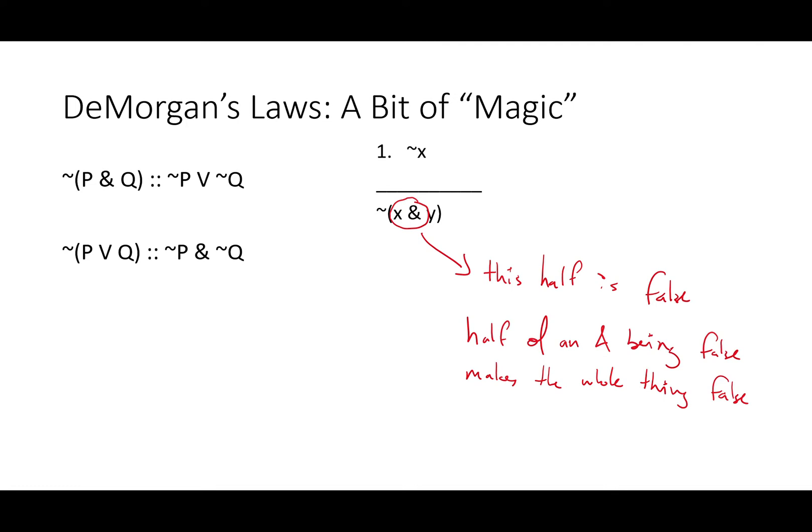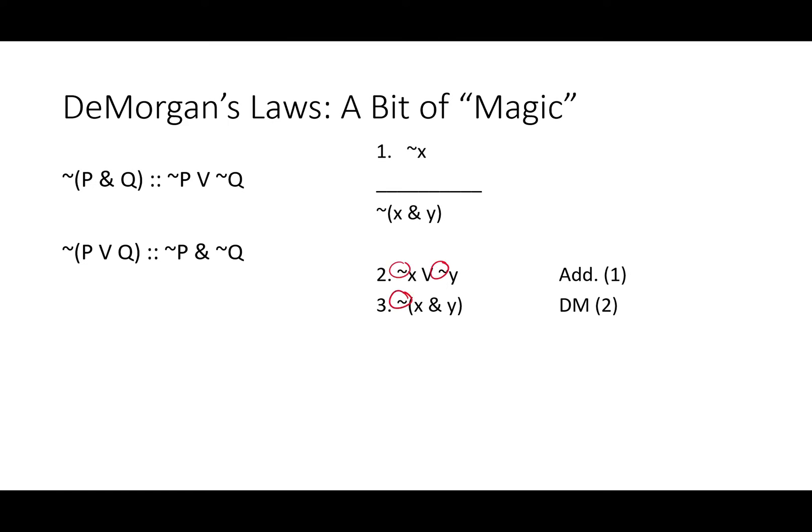If it is not raining today, then we know it's not both raining and cloudy today. We're going to use addition to add on to line one so we get not X or not Y. Since not X is true, it doesn't matter what we add. Now we can use DeMorgan's. We've taken those negations and spread them from the sentence letters to the whole and we've changed the disjunction into a conjunction.